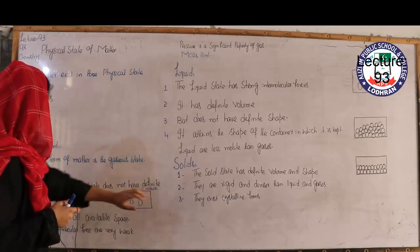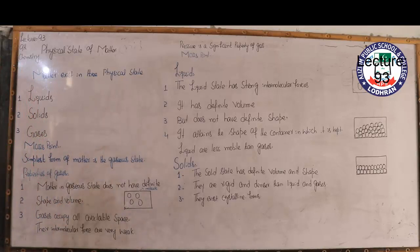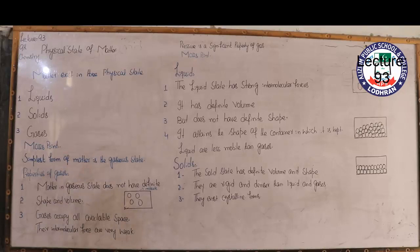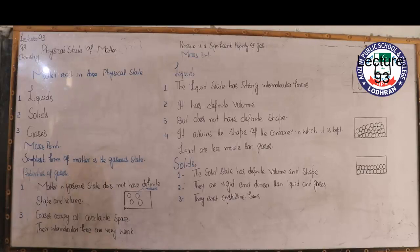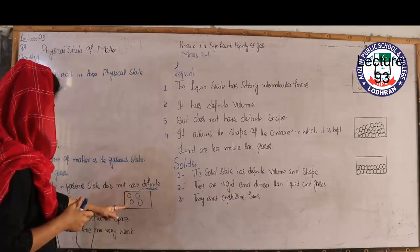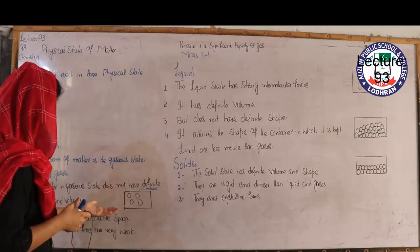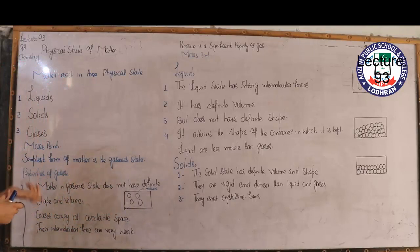Matter in a gaseous state does not have a definite shape and volume because the molecules are present at a very large distance from each other. Gases occupy all available space because they are in a continuous state of motion, and that continuous motion is due to the kinetic energy present in their molecules.